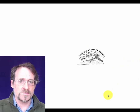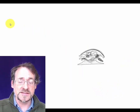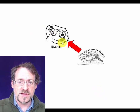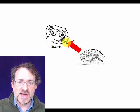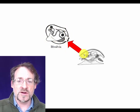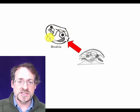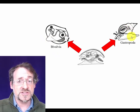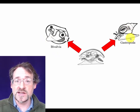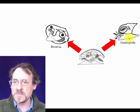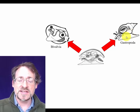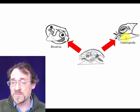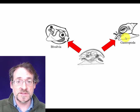This basic body form has become dramatically modified in the mollusks we see today. There are animals called bivalves — clams, scallops, mussels — that have a body form where they are almost entirely enclosed within the shell, with perhaps only a little bit of mantle tissue and a foot sticking out. There are the gastropods — snails and slugs on land and in the water. These have the shell modified into a spiral shape, and land gastropods have a modified way of breathing that allows them to survive in open air.